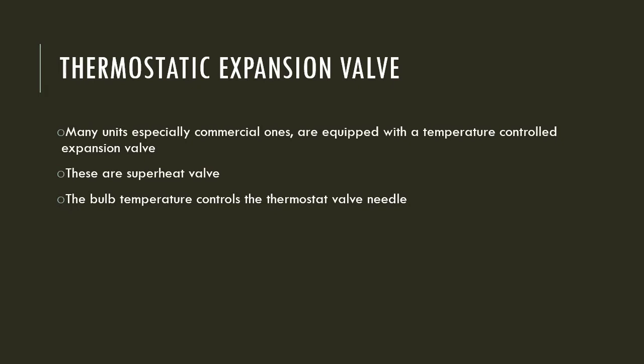This is a superheat expansion valve. This is the superheat. This is a feeler bulb. The feeler bulb is installed in the evaporator coil. This is a suction line. The temperature sensor is installed on a thermostatic expansion valve. This is the feeler bulb installed in the valve.